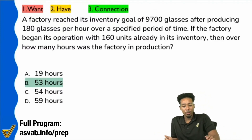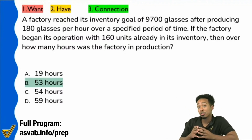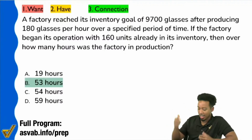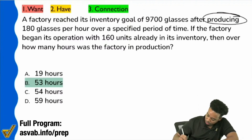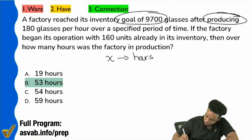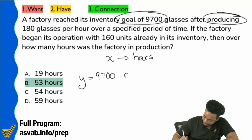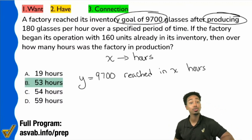So with that said, here we're talking about production. The number of items that we have is going up if we're producing items. Producing items. So what we're looking for here is X — we're looking for X hours. And what we're going to have is the inventory goal of 9,700. So the goal of 9,700 was reached. That means Y equals 9,700, and it's going to be reached in X hours. That's how you can connect those two things.